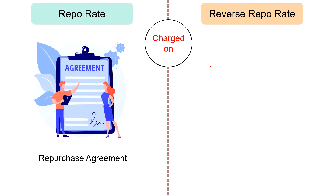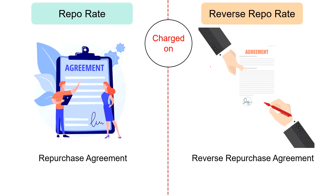Repo rate is charged on a Repurchase Option Agreement, whereas reverse repo rate is charged on a Reverse Repurchase Option Agreement. A repurchase option agreement is a forward agreement between the commercial bank and central bank in which the commercial bank commits to repurchase government securities after the repo period at a predetermined rate. On the other hand, a reverse repurchase option agreement is a buying and selling agreement between the bank and RBI in which the bank promises to resell government securities to RBI once the reverse repo period is over at a predetermined rate of interest.